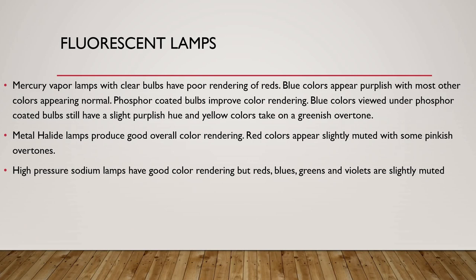Mercury vapor lamps with clear bulbs have poor rendering of red. Blue colors appear purplish, with most other colors appearing normal. Phosphor coated bulbs improve color rendering, but blue colors still have a slight purplish hue and yellow colors take on a greenish overtone. Metal halide lamps produce good overall color rendering — red colors appear slightly muted with some pinkish overtone. High pressure sodium lamps have good color rendering, but reds, blues, greens, and violets are slightly muted.